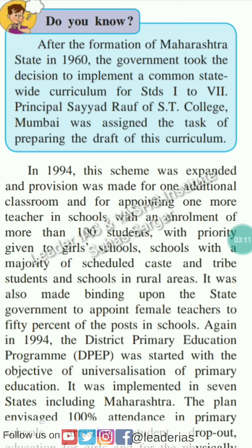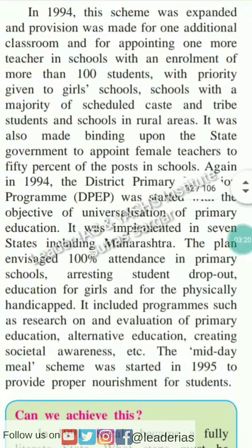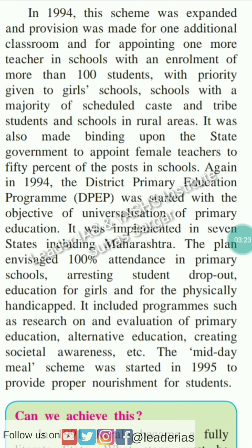In 1994, the scheme was expanded and provision was made for an additional classroom and for appointing one more teacher in the school. With the enrollment of more than 100 students, with priority given to girls' schools, schools with a majority of scheduled caste and tribes students, and schools in rural areas. It was also made binding upon the state government to appoint female teachers to 50% of posts in schools. Again in 1994, the district primary education program was started with the objective of universalization of primary education. It was implemented in seven states including Maharashtra.